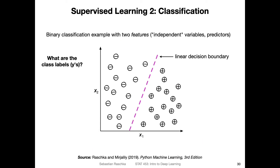Another example of supervised learning is classification. Classification is actually much more common than regression if you look at the deep learning literature. Most systems are focused on classification — for example, recognizing objects in images like whether it's a cat or a dog. We'll see a lot of classification examples in this class. Think back to the ATM machine example recognizing handwritten digits — classifying whether it's a two, three, four, and so forth.